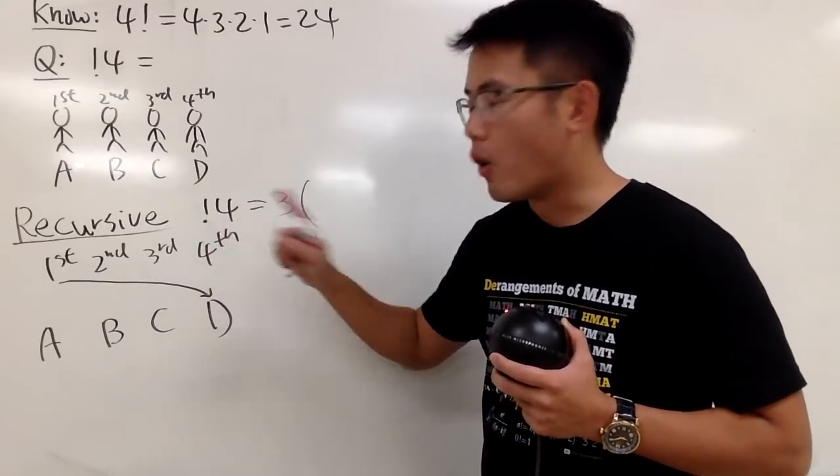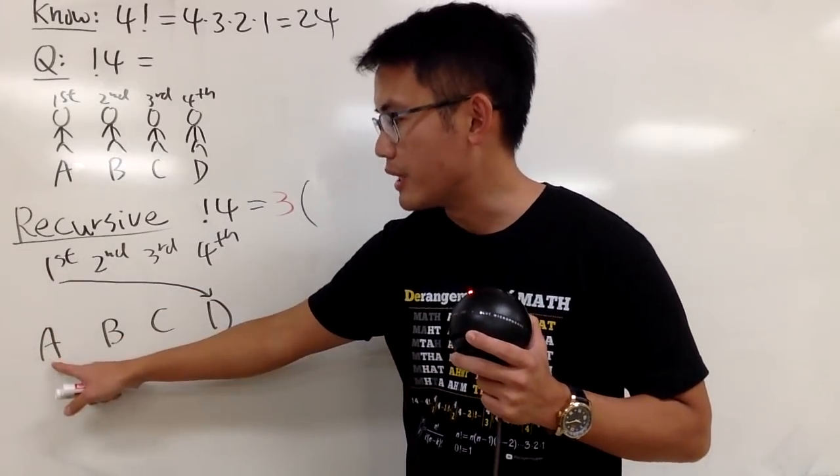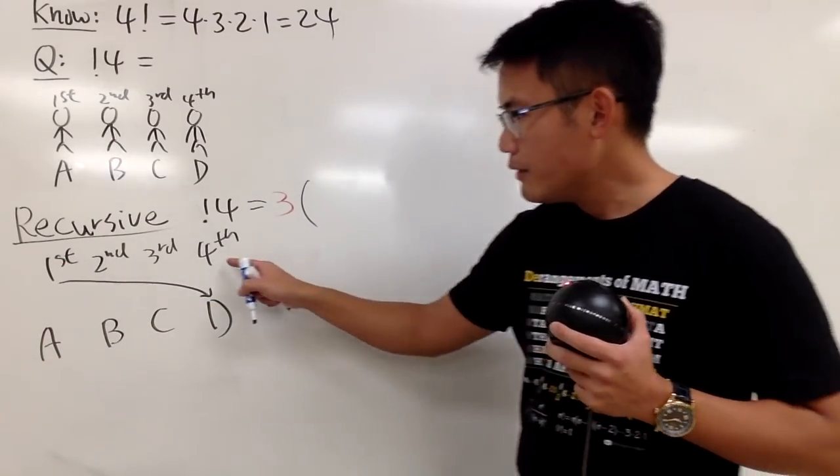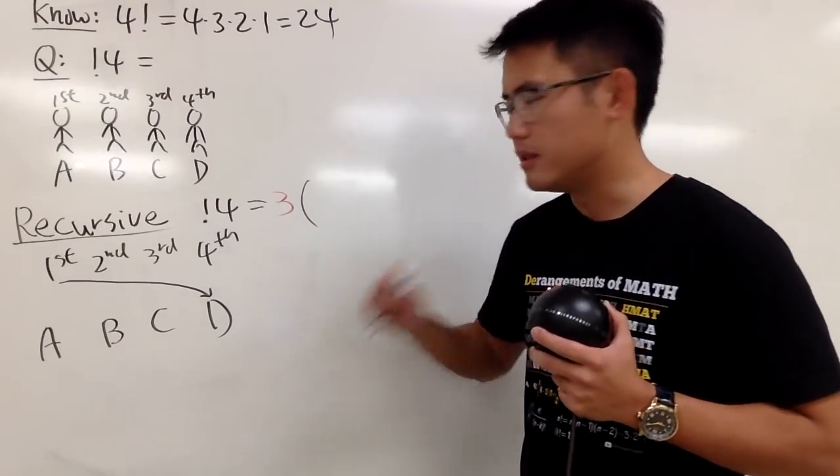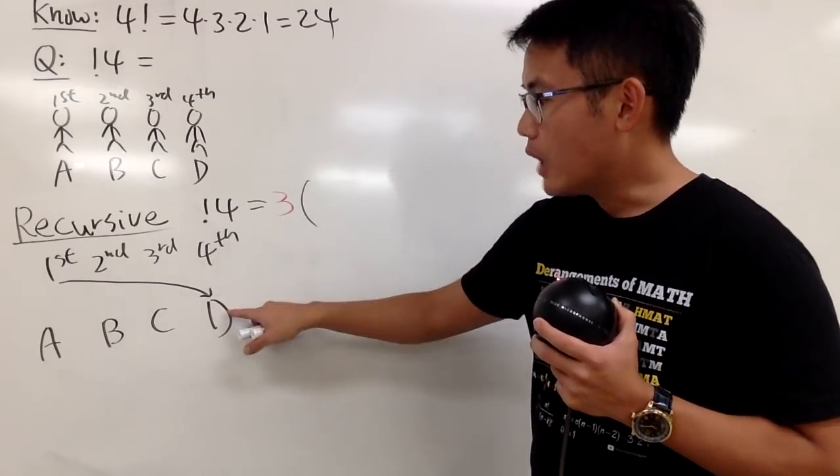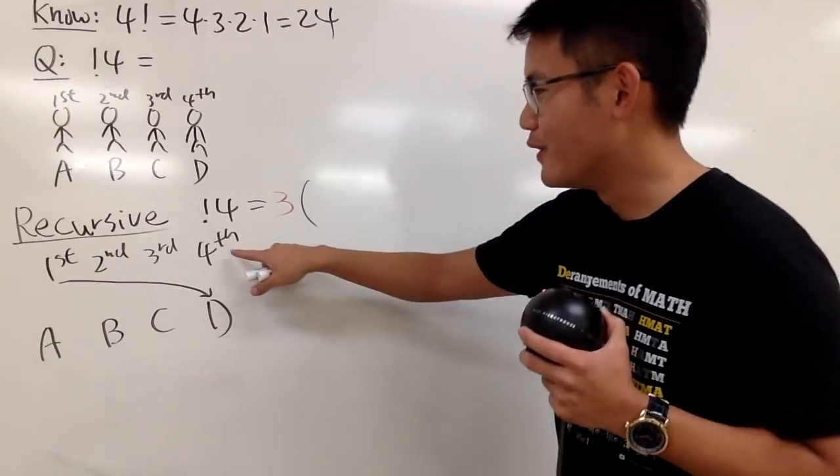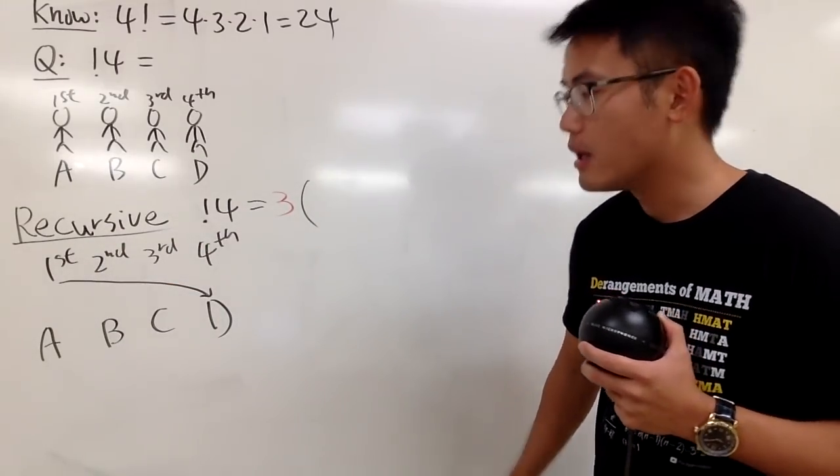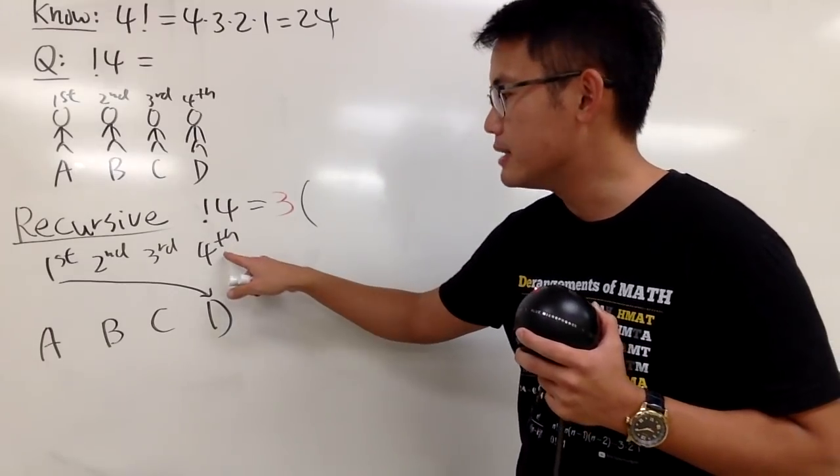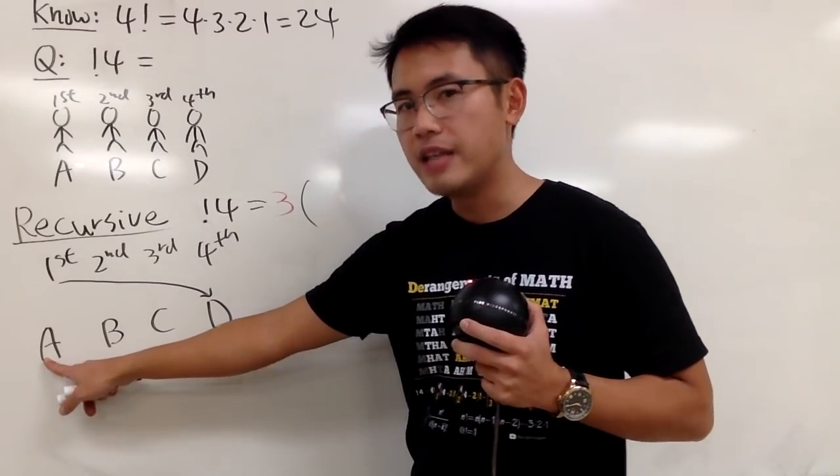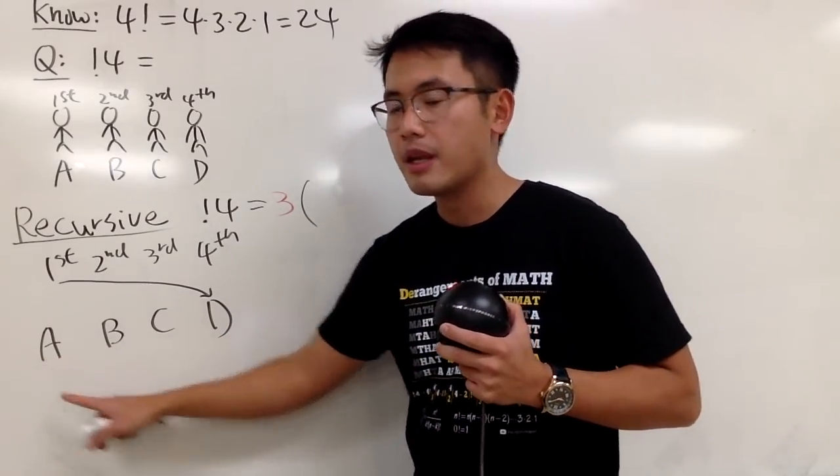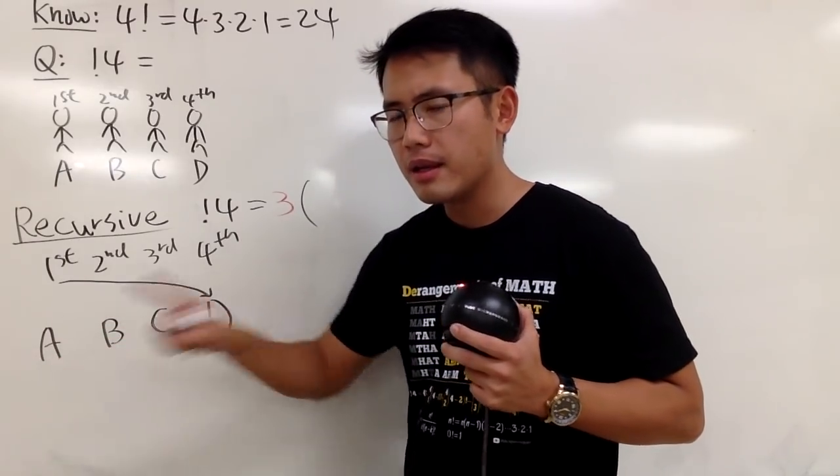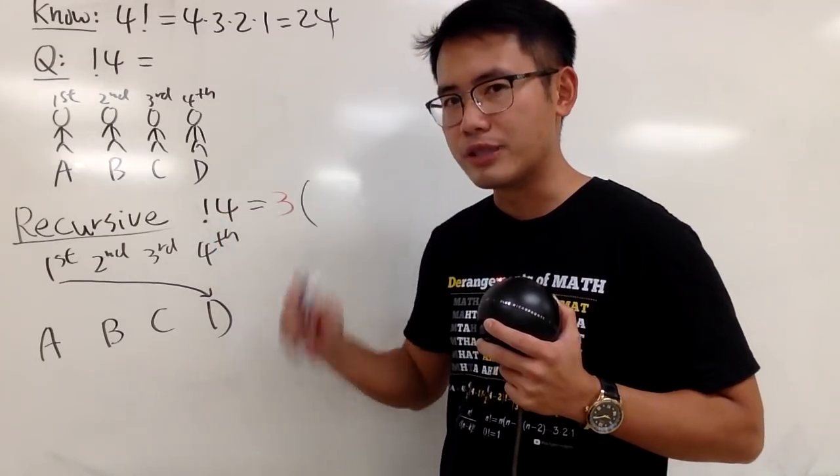And now we actually have two situations to consider. Once again, factorial 4, the way that we approach it is that we prevent the first person to get his gift, right? We prevent the first person to get A. Now, here is the deal. We have to focus on the fourth person right here. Why? Because this is serious. Because I already gave the gift D to the first person. There's no way for the fourth person to get his or her own gift back, right? Because D is to the first person already. Now, it depends on two situations. It depends if the fourth person takes the first person's gift or not. Namely, if the fourth person takes A or not.